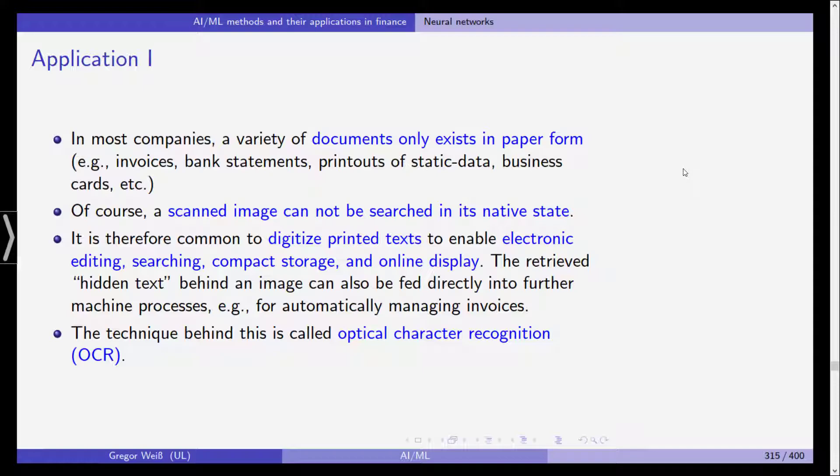A scanned image cannot be searched in its native state. Thus it is usually common to digitize printed text to enable electronic editing, searching, compact storage and online display. The retrieved hidden text behind an image can also be fed directly into further machine processes, for example automatically managing invoices, receipts, transactions. This is usually the starting point, digitalization of these printed documents that decades and years ago were only available in printed form but nowadays they can be digitized and used in a computer.